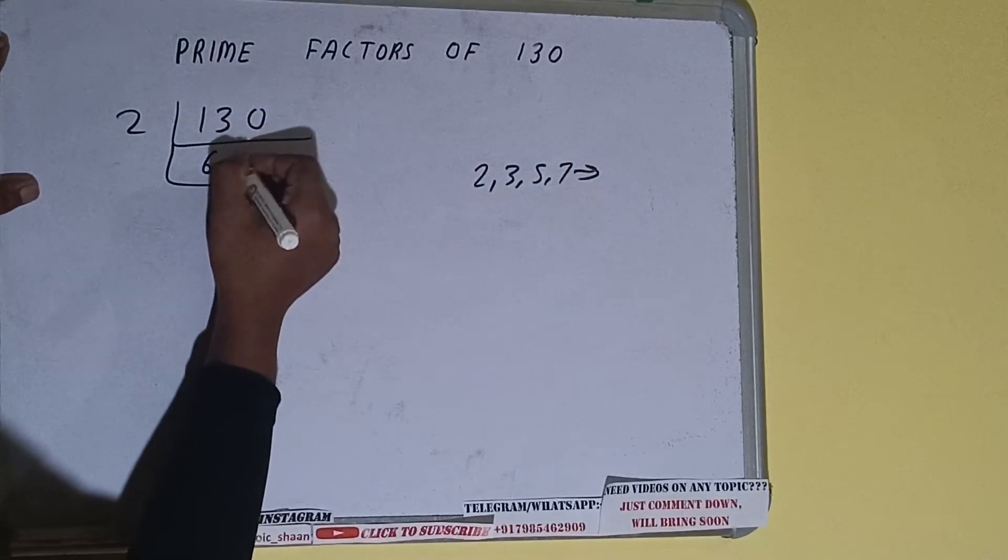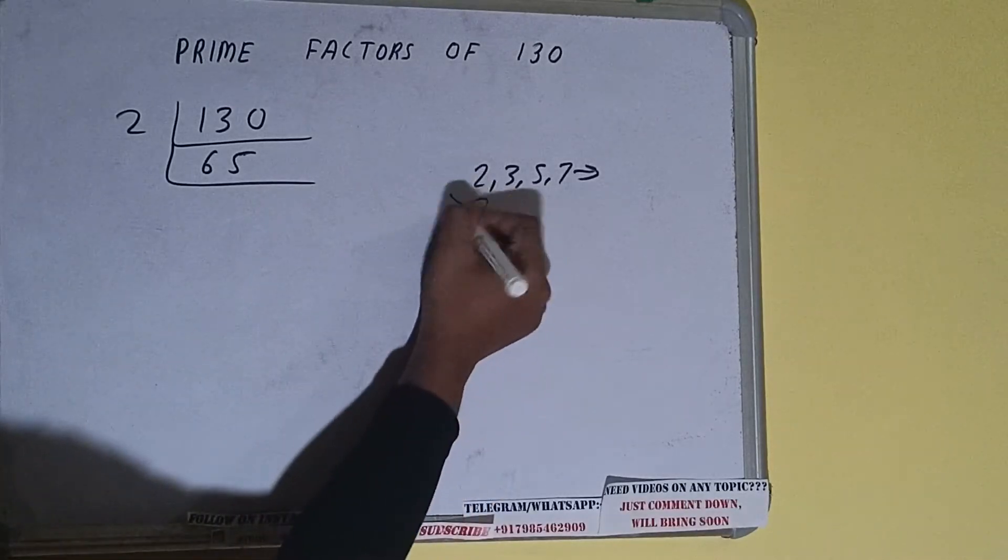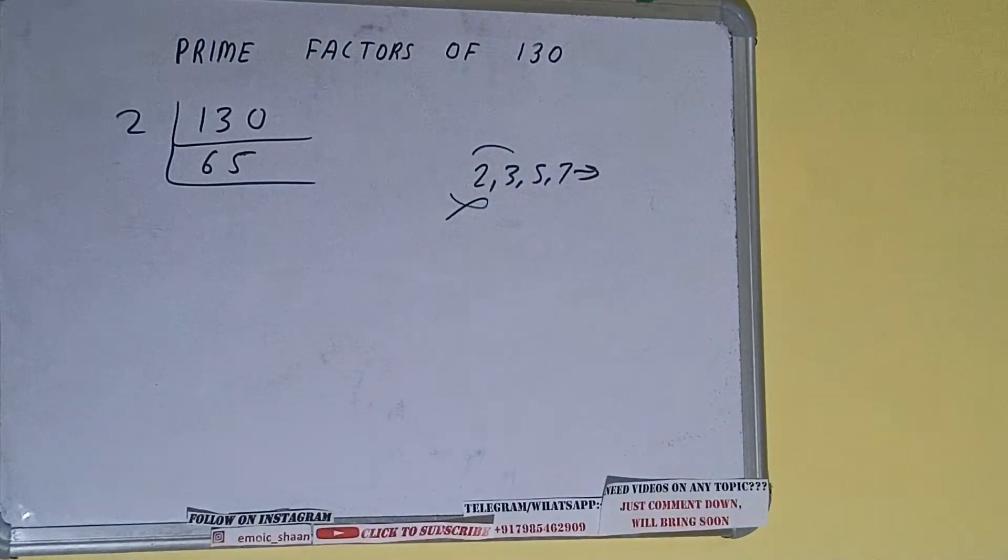Is this 65 divisible by 2? The answer is no, because the number is odd. So we'll check with the next lowest prime number, that is 3. It is not divisible by 3 also.